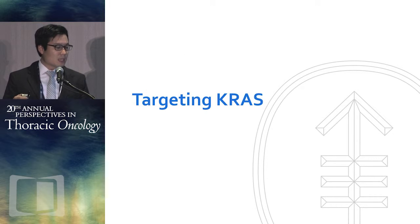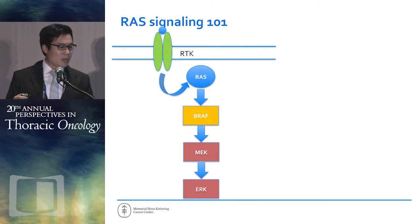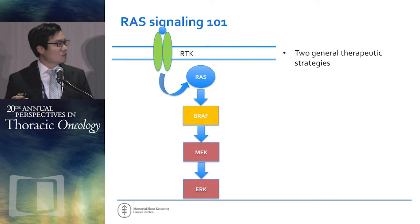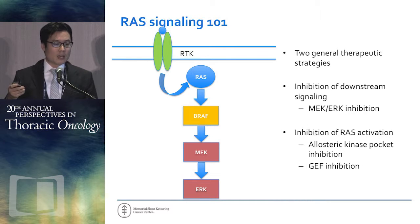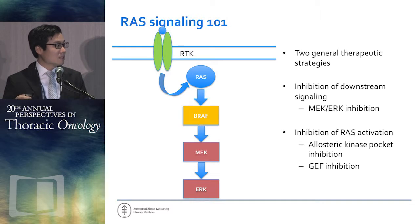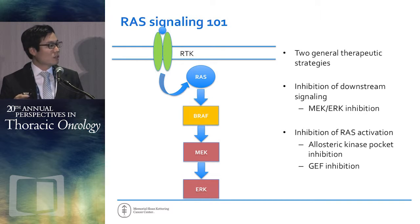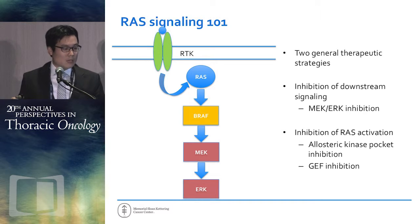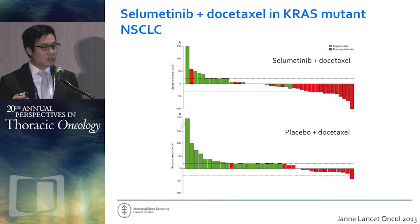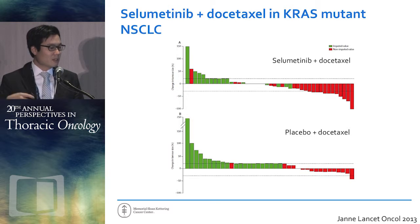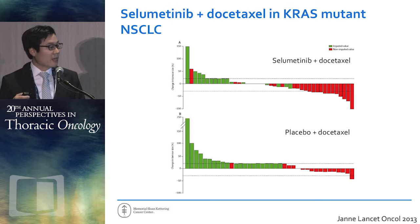Targeting KRAS has two general therapeutic strategies. One involves inhibition of downstream signaling — MEK-ERK inhibition. The other, more recent approach is inhibition of KRAS itself, either through guanine exchange factor inhibition or allosteric kinase pocket inhibition. The first major effort for downstream MEK kinase inhibition was a randomized trial of selumetinib plus docetaxel versus docetaxel alone in KRAS mutant lung cancer patients, published by Pacciani in Lancet Oncology.